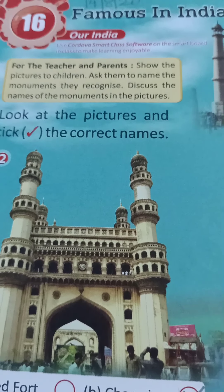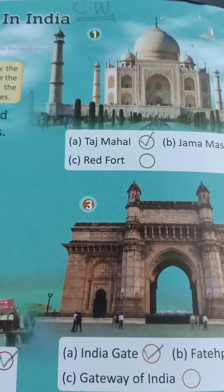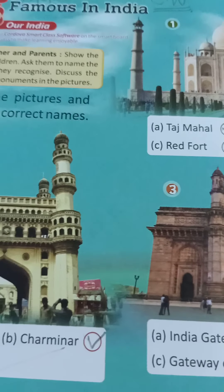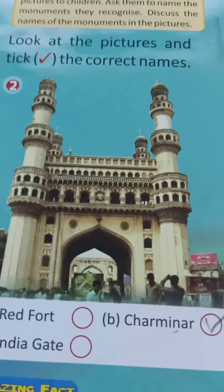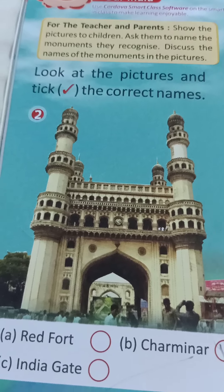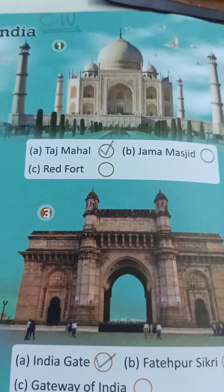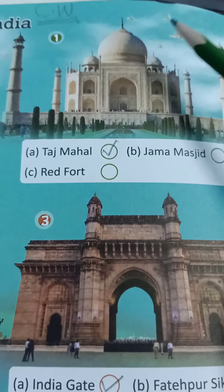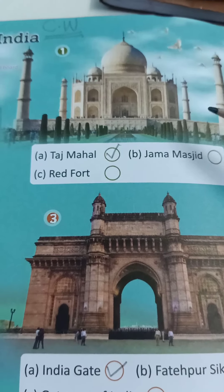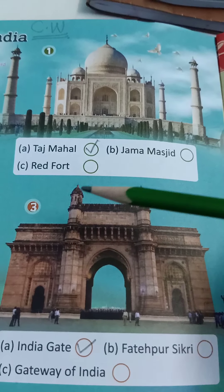Children, here are the pictures of some monuments and you have to name them. Look at the pictures and tick the correct ones. Three options are given and we have to tick the correct one.